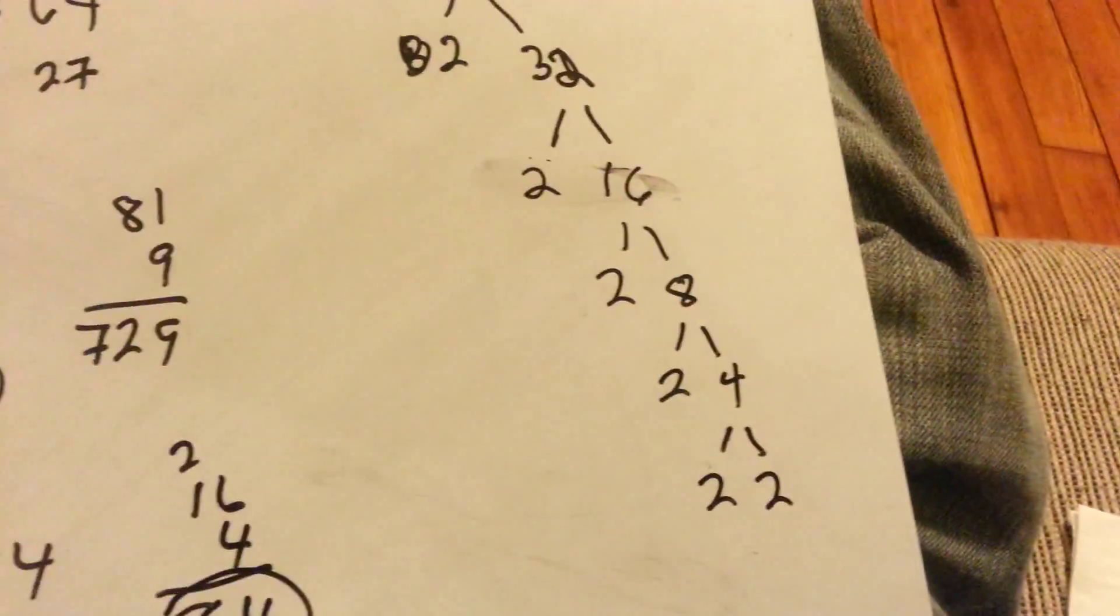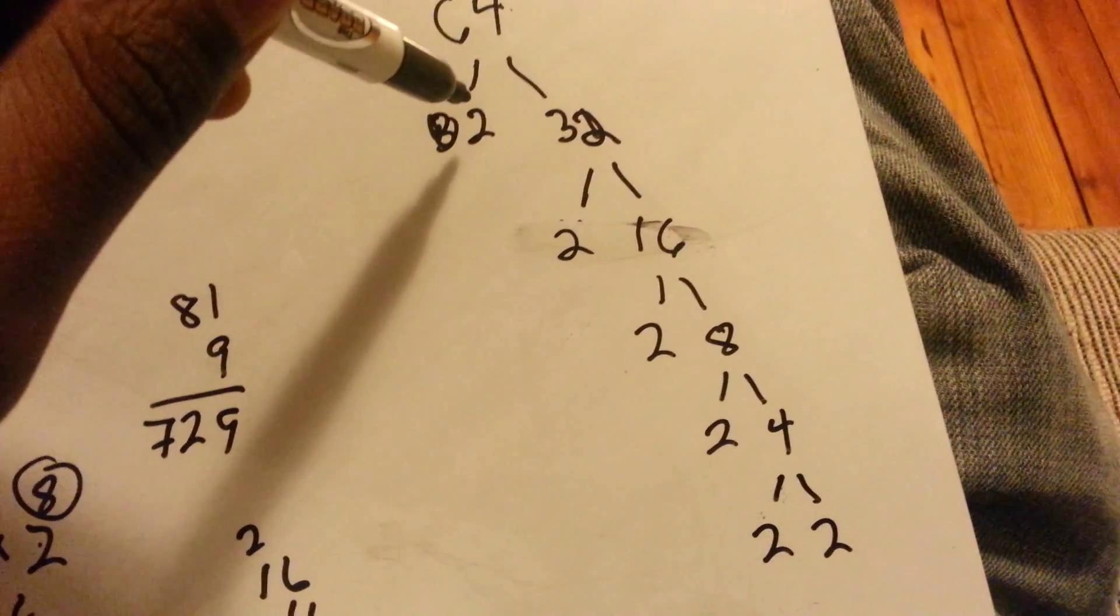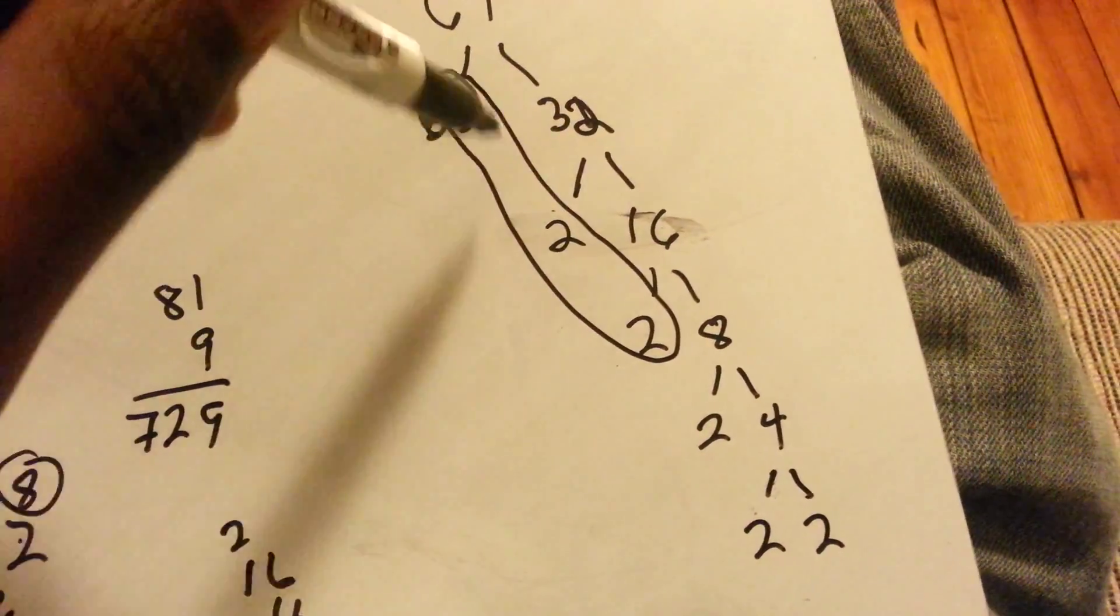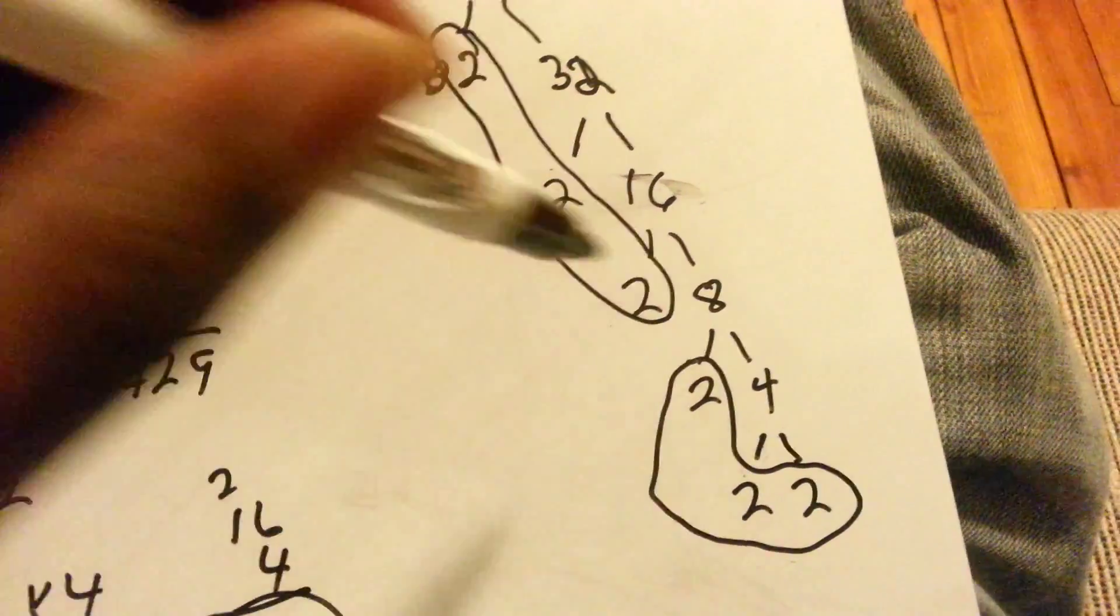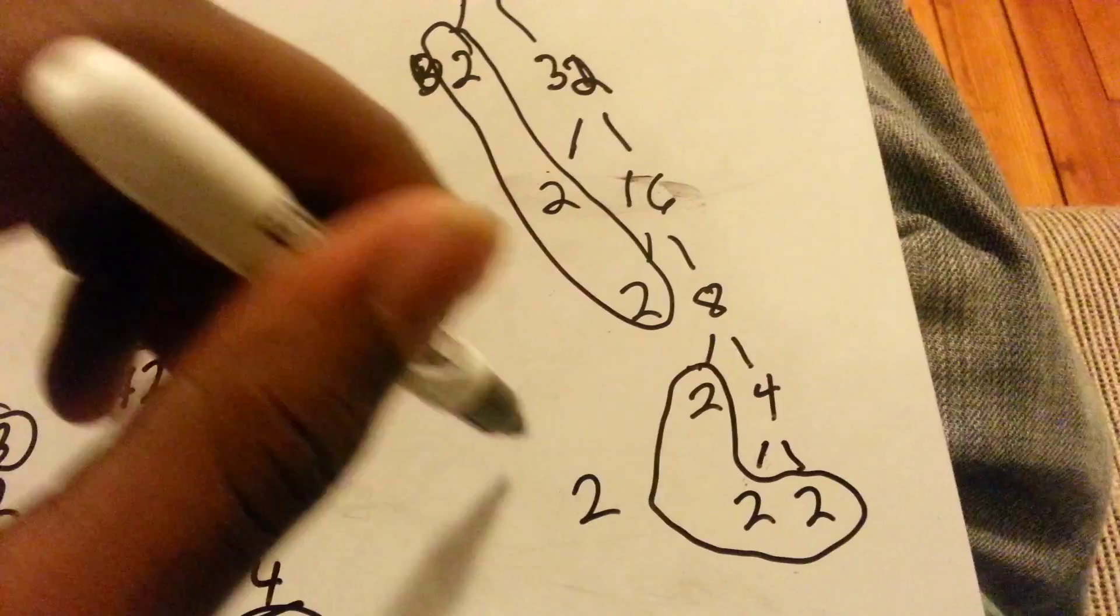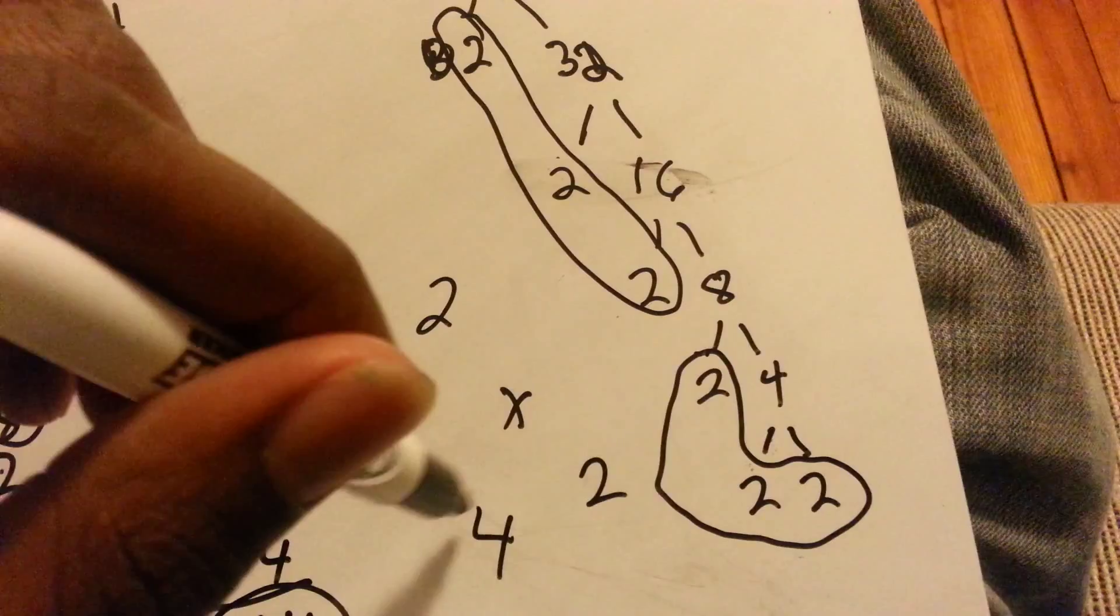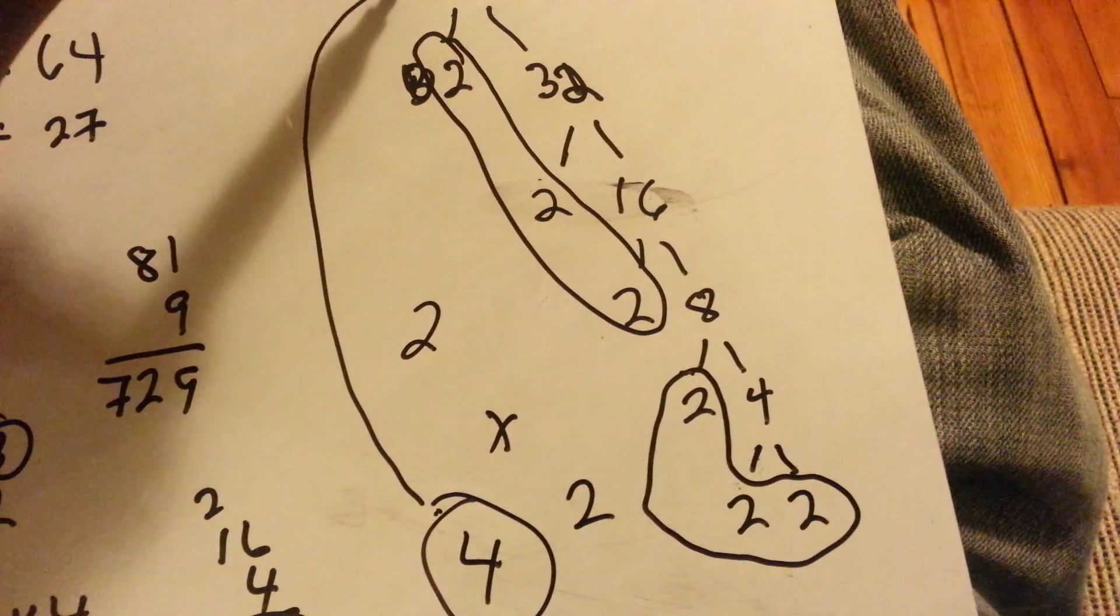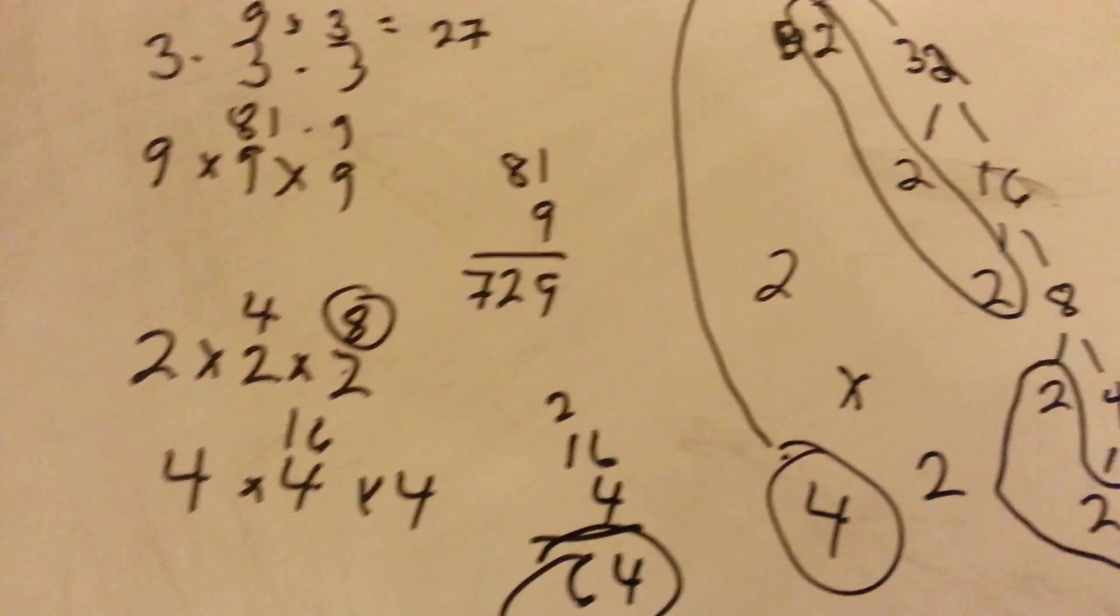And then none of them can be divided anymore. And since it's a cube root, we have to do groups of three. Try and find groups of three numbers. So we have one, two, three twos. One, two, three twos. So that's a two and another two. And we multiply those and we get four. So four would be the cube root of 64. Answer D.